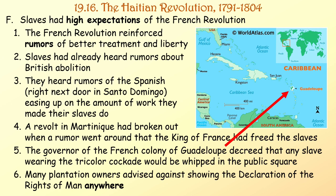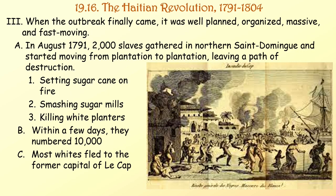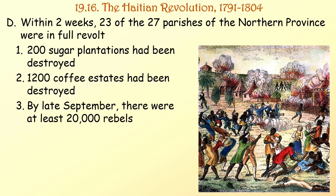Many plantation owners advised against showing the Declaration of the Rights of Man anywhere. When the outbreak finally came, it was well-planned, organized, massive, and fast-moving. In August 1791, 2,000 slaves gathered in northern Saint-Domingue and started moving from plantation to plantation, leaving a path of destruction — setting sugarcane on fire, smashing sugar mills, killing white planters. Within a few days they numbered 10,000. Most whites fled to the former capital of Le Cap. Within two weeks, 23 of the 27 parishes of the northern province were in full revolt. 200 sugar plantations and 1,200 coffee estates had been destroyed. By late September, there were at least 20,000 rebels.